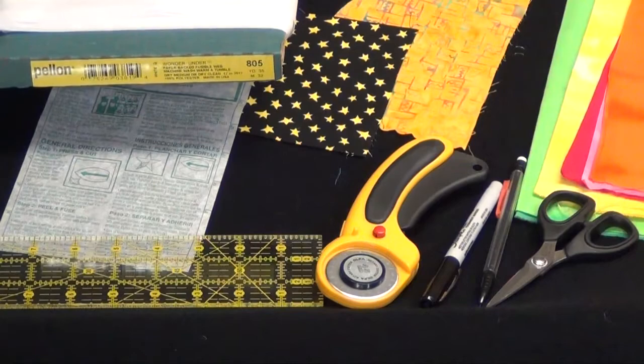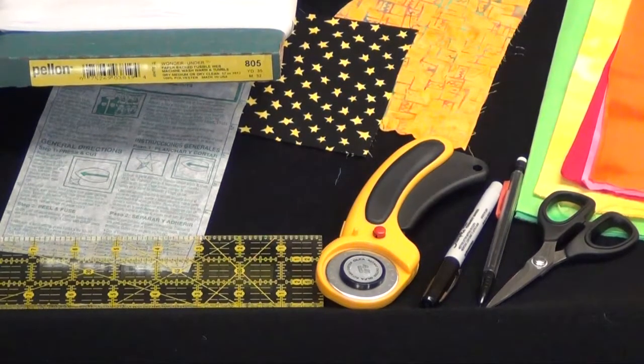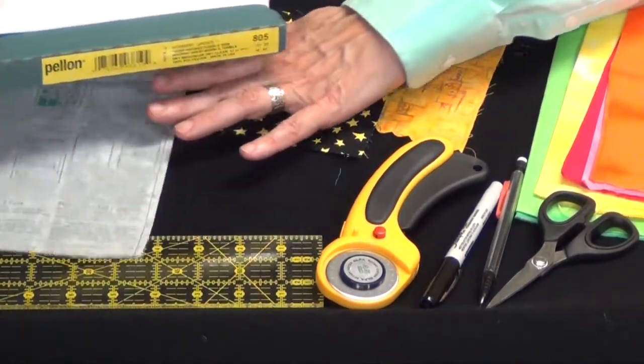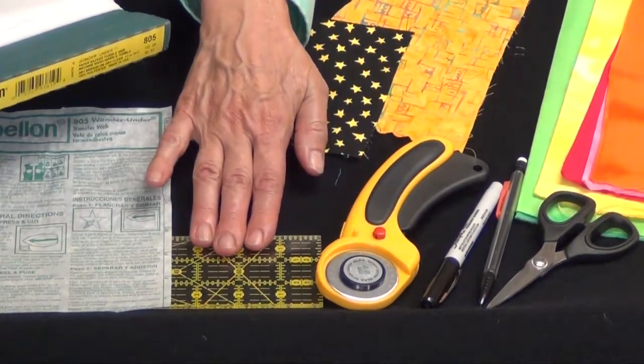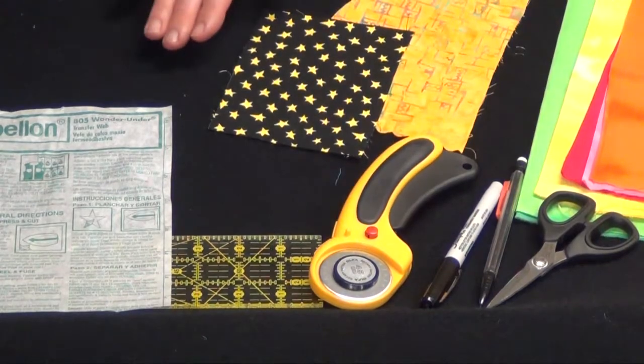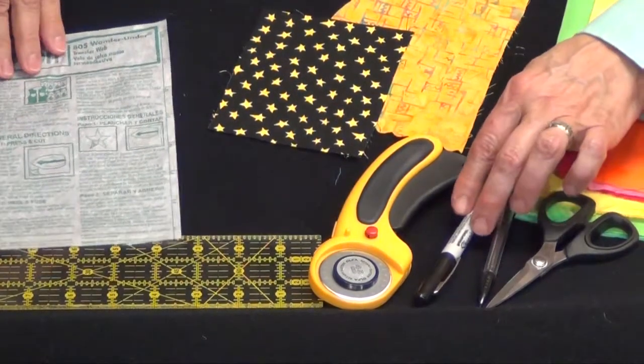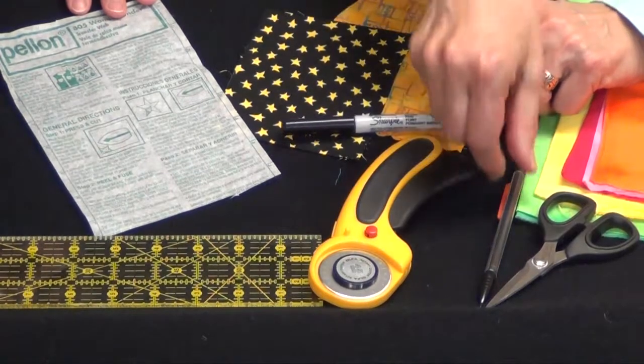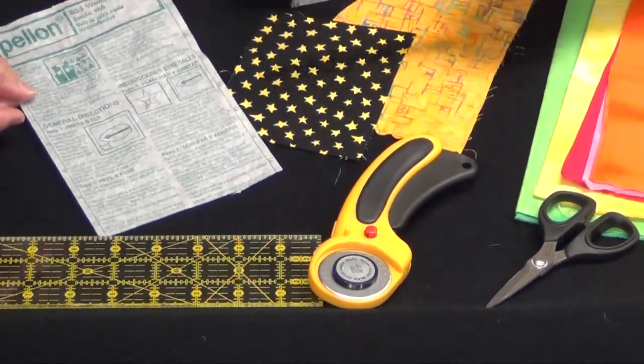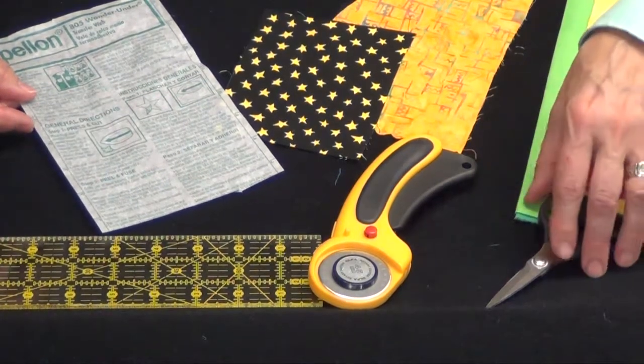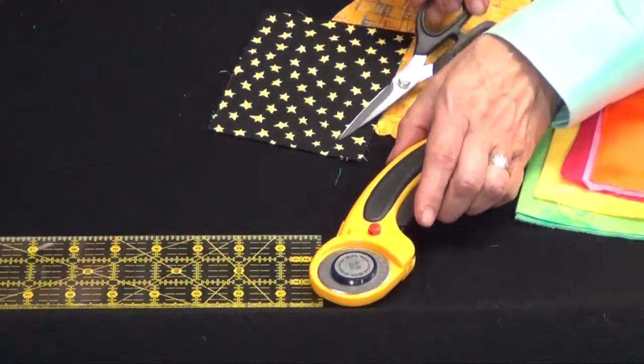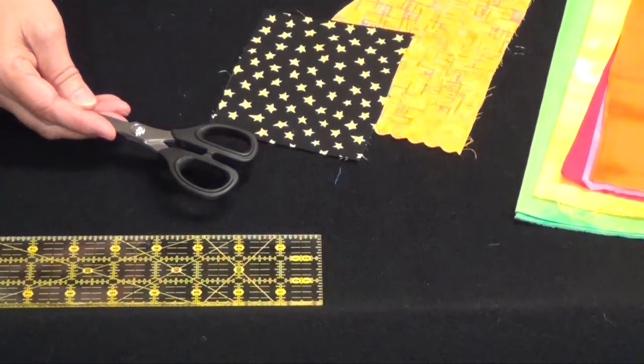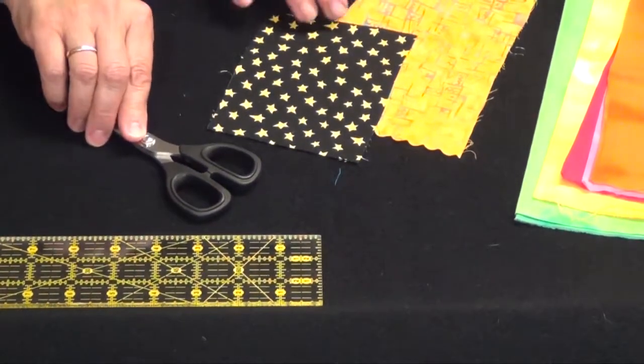So these are the tools that you need to start with. We use Wonder Under number 805. It's from Pellon. It comes with the release paper and we've both been very happy with that product. We obviously use our rotary ruler and rotary cutter and a rotary mat. Good idea, Freda. Use that mat. And then we like to use for marking an extra fine Sharpie marker or a pencil. Both of those work really well and Laura's going to discuss that process with you. And of course you need really sharp scissors when you're cutting out your designs. I like these scissors. They fit my big thumbs, Freda.